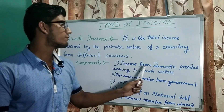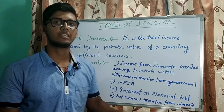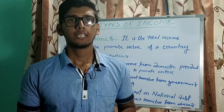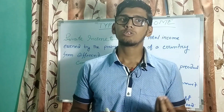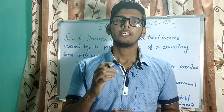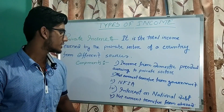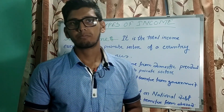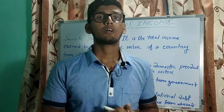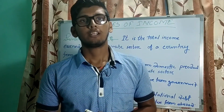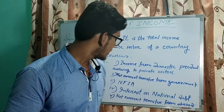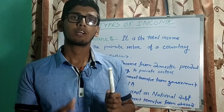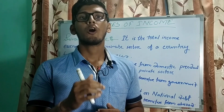The first component is income from domestic product accruing to the private sector. After selling domestic products, the part of income that goes to the private sector is calculated in private income. The next one is net current transfer from government — that means government provides various types of subsidies and allowances which come into the hands of the private sector, and this is also calculated in private income.